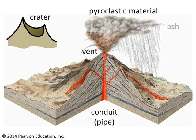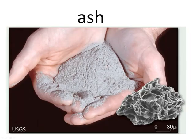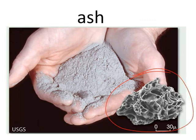If it's really fine-grained stuff that is easy to keep aloft in the air, that's called ash. If you were to hold a handful of ash, it would look something like this. If you look at it on the microscopic level, you basically see something that looks like a tiny piece of pumice — a frothy, glassy fragment.